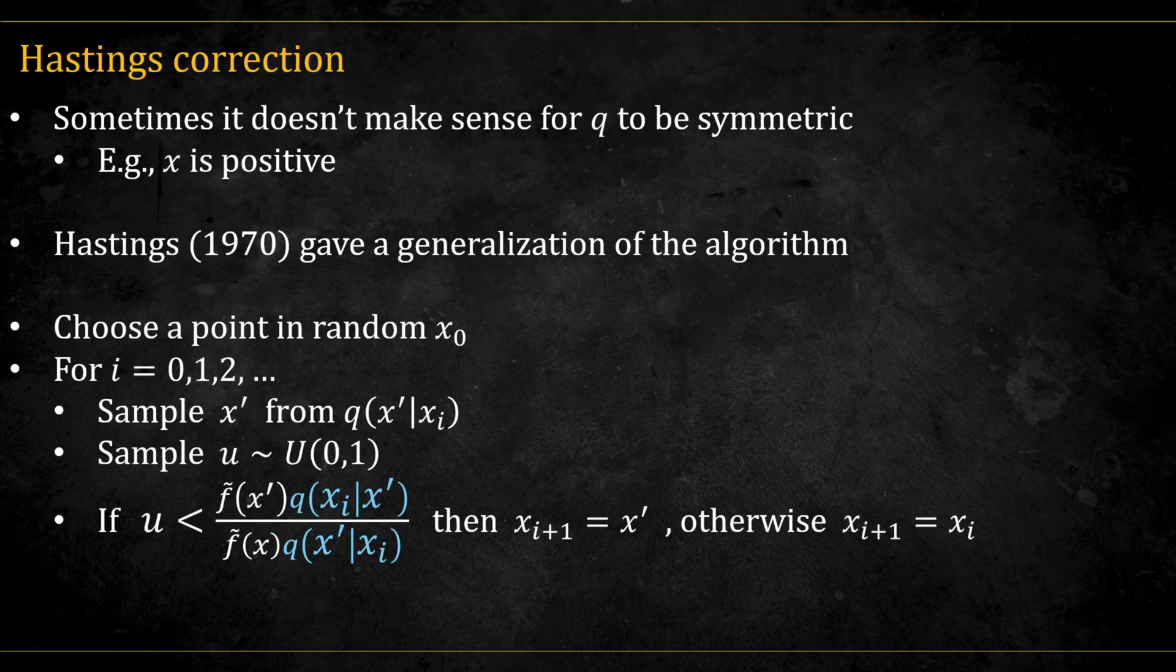For example, when x is positive. Now we could transform the variable, but we could also use Hastings correction and simply incorporate the inverse q-ratio into the acceptance probability.